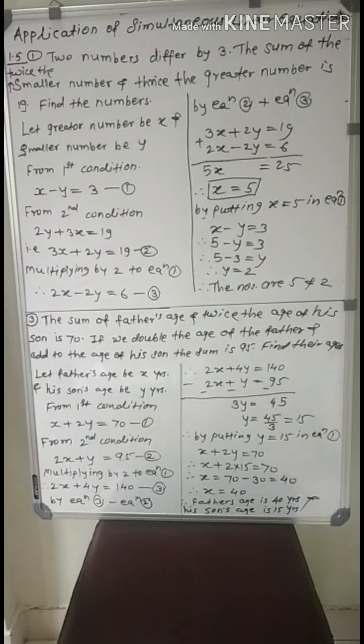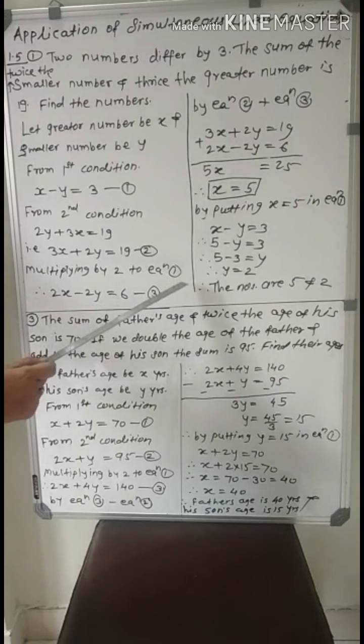By observing equations 1 and 2, if we equate the coefficient of y, then the variable y will be eliminated by adding. So multiplying by 2 to equation 1, we get 2x minus 2y equal to 6. This is equation number 3.